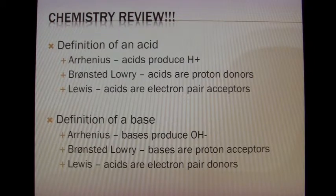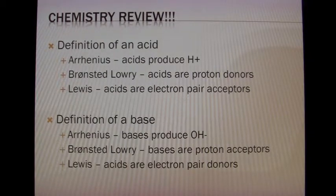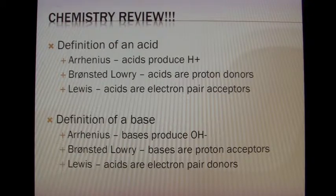Let's quickly review our acid-base terminology. Here we see the definition of acids and bases. Arrhenius viewed acids as producing an H+ with a base producing OH−. Bronsted-Lowry then came along to tell us that acids are proton donors and that bases are proton acceptors. And finally Lewis came and told us that acids are electron pair acceptors while bases are electron pair donors.